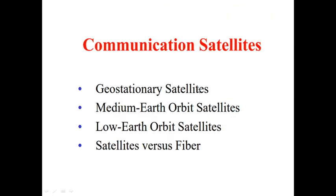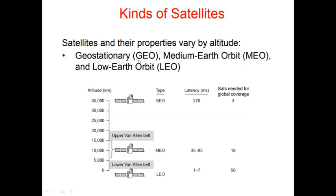What is a communication satellite? It is going to cover four topics. The first one is about kinds of satellites. According to their properties, satellites are divided into three categories: geostationary Earth orbit, medium Earth orbit, and low Earth orbit.